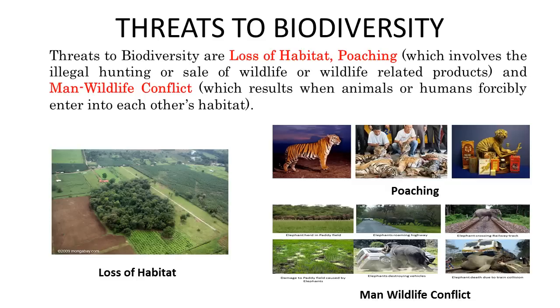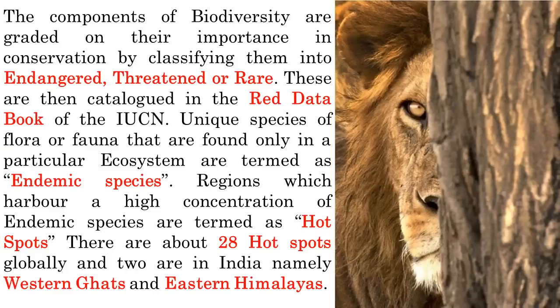Man-wildlife conflict results when animals or humans forcibly enter into each other's habitat. The components of biodiversity are graded on their importance in conservation by classifying them as endangered, threatened or rare. These are catalogued in the Red Data Book of the International Union for the Conservation of Natural Resources, or IUCN. Regions with a heavy concentration of endemic species — species found only in that specific area — are known as hotspots. There are about 28 hotspots identified worldwide, including the Amazon forest. In India, there are 2 hotspots: the Western Ghats and the Eastern Himalayas.